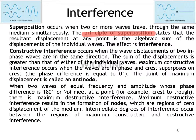Destructive interference is when two waves are completely out of phase — 180 degrees out of phase — meaning a crest is lined up against a trough. Those two algebraically sum as well. If the crest has an amplitude of positive one and the trough has an amplitude of negative one, positive one and negative one add to zero, giving a resultant wave of zero amplitude. This continues across the whole wave — this is complete destructive interference.